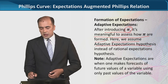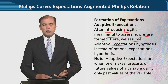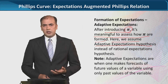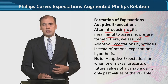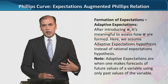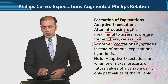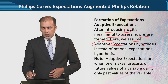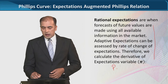Here we assume the adaptive expectation hypothesis. Broadly speaking, there are two kinds of expectations: adaptive versus rational expectations. Adaptive expectations are based on past trends, while rational expectations are based not only on past trends but on all available market information. For simplicity, we assume adaptive expectations exist and set rational expectations aside. You can read the theory of rational expectations yourself in macroeconomics.